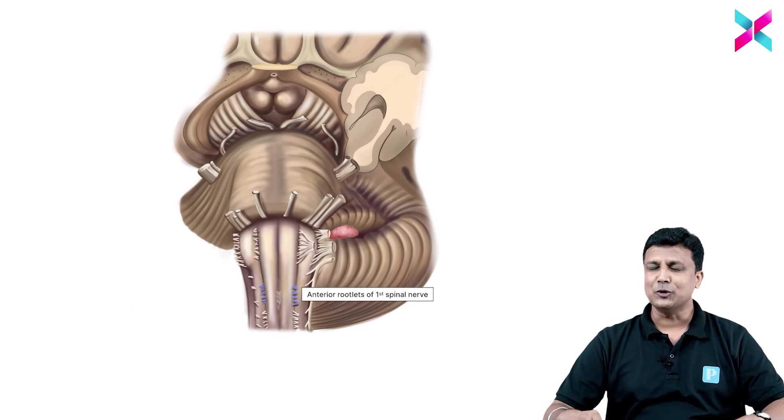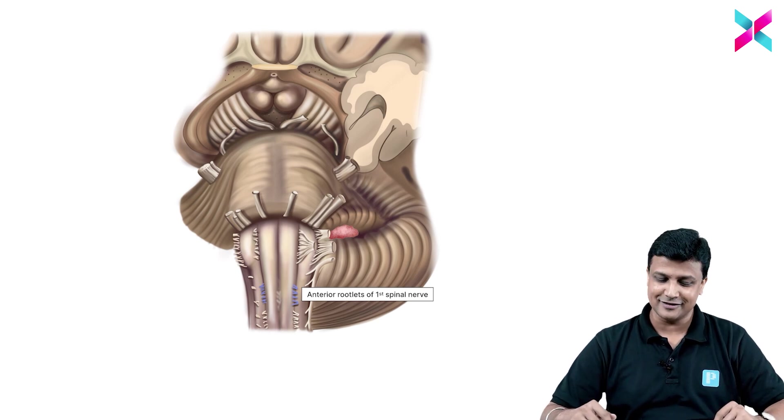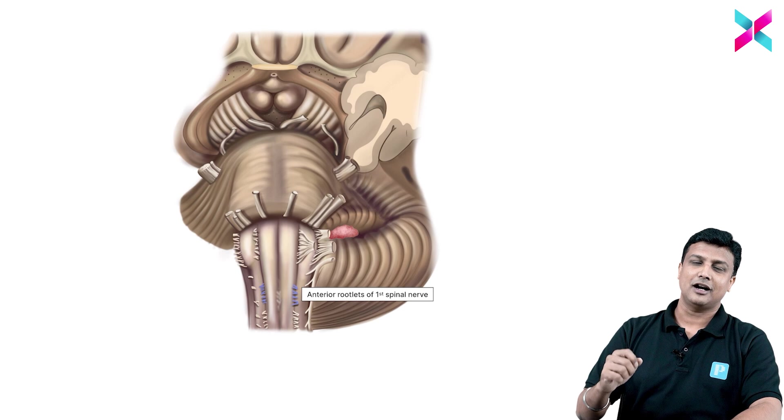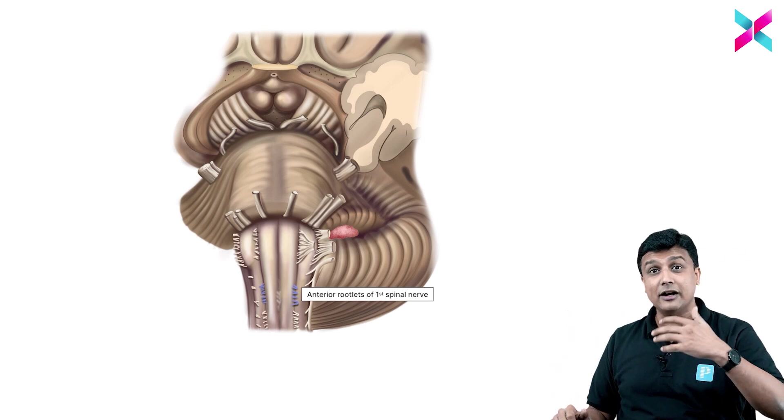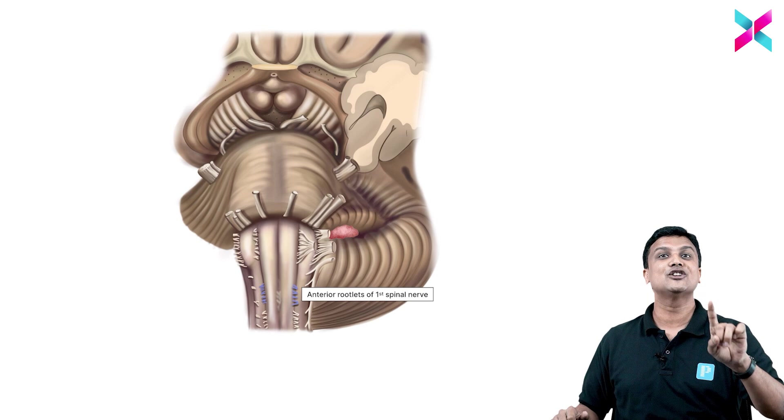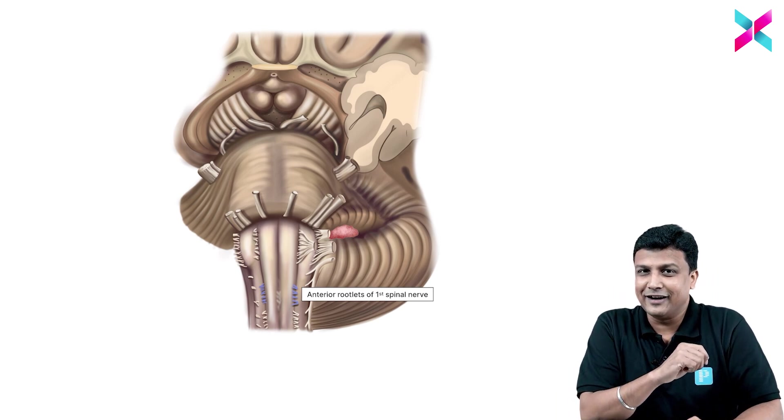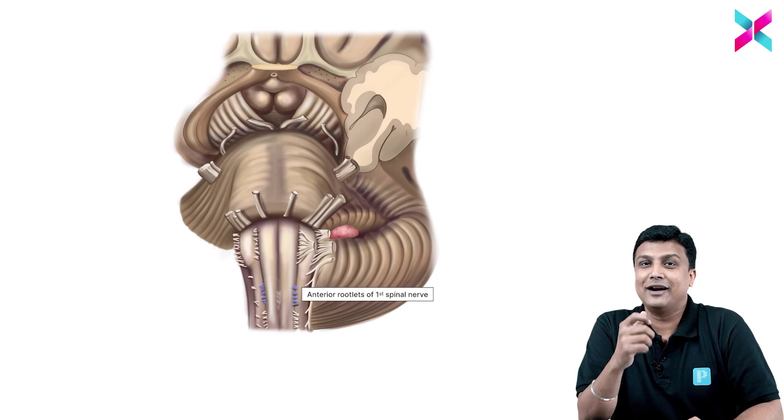So in this manner, mainly my intention here is that the moment my students are looking at this diagram of ventral aspect of the brainstem, you should be able to identify each and every structure. And I hope now you are able to identify each and every structure on this ventral aspect of the brainstem.